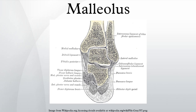Structures that pass behind the medial malleolus, deep to the flexor retinaculum: tibialis posterior tendon, flexor digitorum longus, posterior tibial artery, posterior tibial vein, tibial nerve, and flexor hallucis longus.